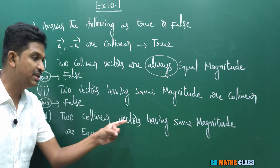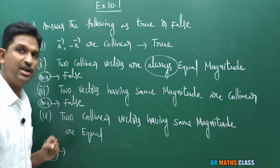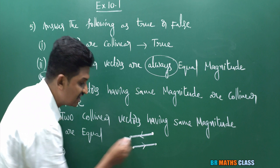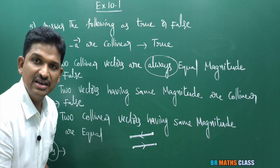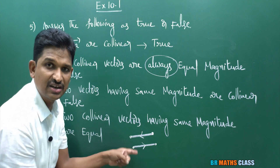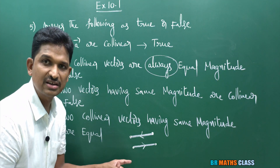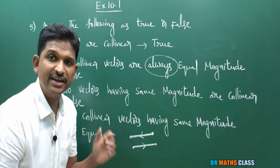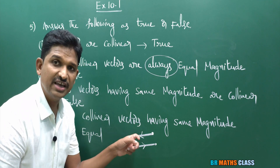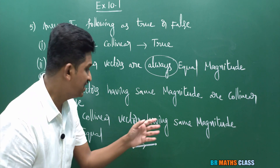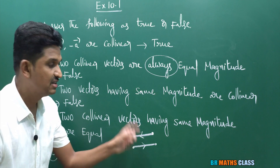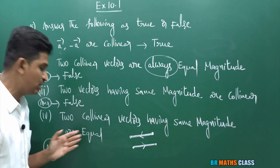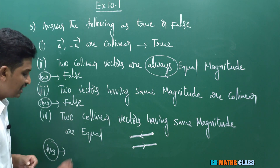Last statement: two collinear vectors having the same magnitude are equal. Suppose one vector is in one direction and another is in the opposite direction. These vectors lie on parallel lines, so they are collinear and have the same magnitude, but their directions are different. Equal vectors require both same magnitude and same direction. So this statement is false.